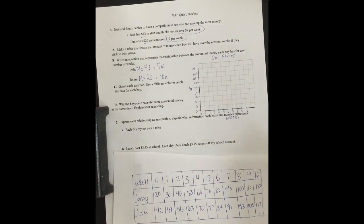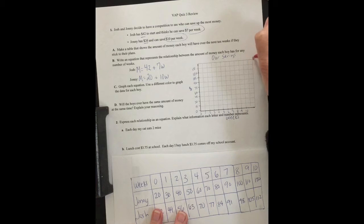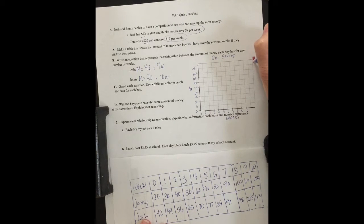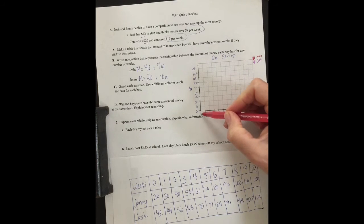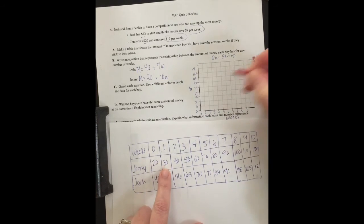So now I need to pick a color for each boy and I'm going to make my key or legend. And up here I'll have red is Johnny and I will do purple is Josh. Alright, so I'll start with Johnny. At week zero, if I look at my thing, Johnny has $20. So I'll go up to 20 and put a dot.